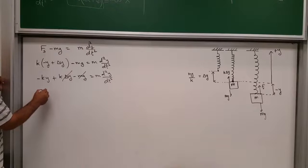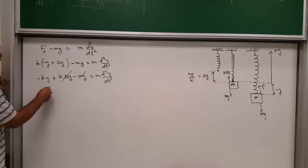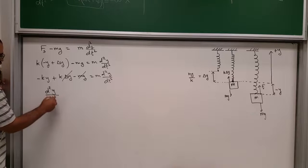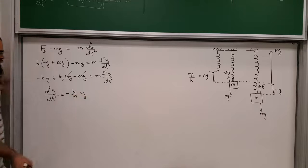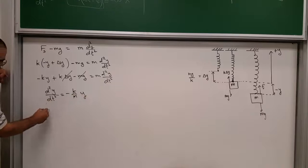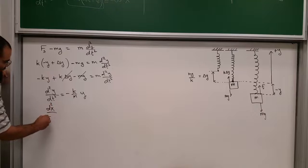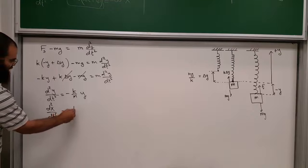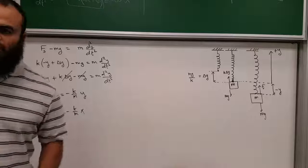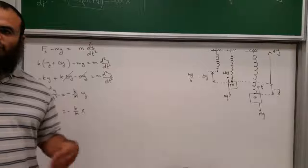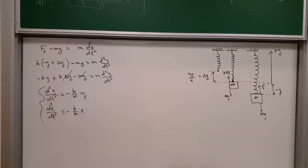So the vertical spring-mass system obeys the same equation of motion as the horizontal one — ÿ = −(k/m)·y — and therefore exhibits identical simple harmonic motion. Next we will talk about the simple pendulum, the physical pendulum, and related topics.